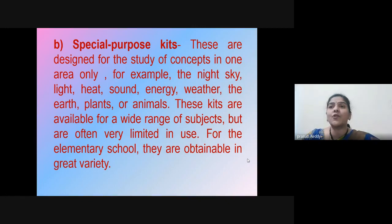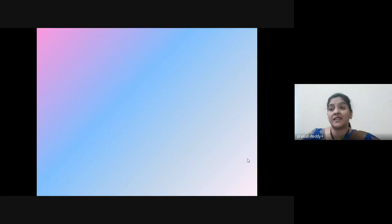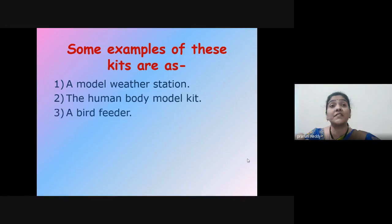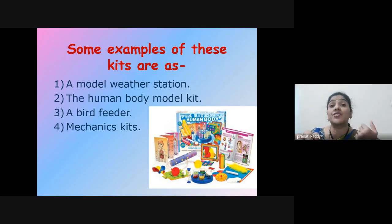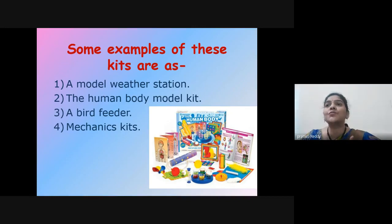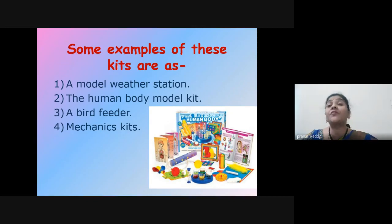Some examples of special purpose kits are: a model weather station, a human body model kit, a bird feeder, and a mechanics kit. A model weather station may be employed in the follow-up of a trip to a weather station to give students an opportunity to use some of the instruments they may have observed in forecasting activities. The human body kit enables students to see the relationship of the various structures of human anatomy and to make a detailed study of each part of a system. The disassembled parts may be reassembled at any time for this purpose.